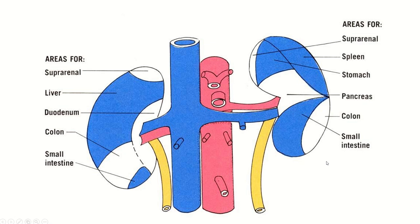The relation of the anterior surface of the kidney. This is the right kidney. The apical portion is related with the suprarenal gland, then the hepatic area, then the hepatic flexure of the colon, small intestine and duodenum. The hepatic area and the area for small intestine are covered by peritoneum.